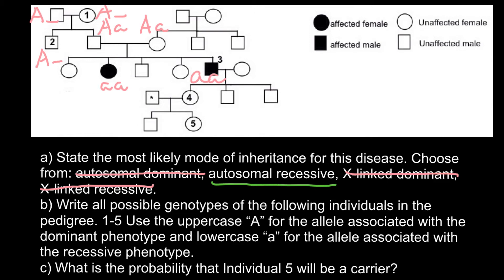For individuals four and five, the genotypes are more straightforward. Individual four is an outcross — not genetically related to the family — so we assume a normal genotype of AA. Since one parent is homozygous dominant and the other is homozygous recessive, individual four would be an obligate heterozygous, Aa. The person marked with an asterisk we assume to be homozygous normal — AA.